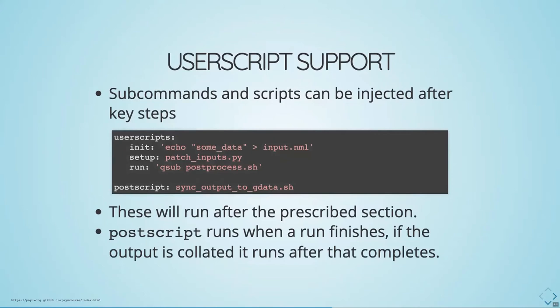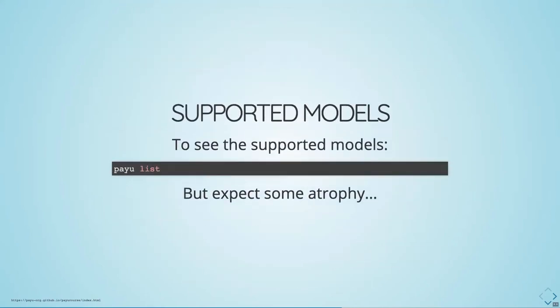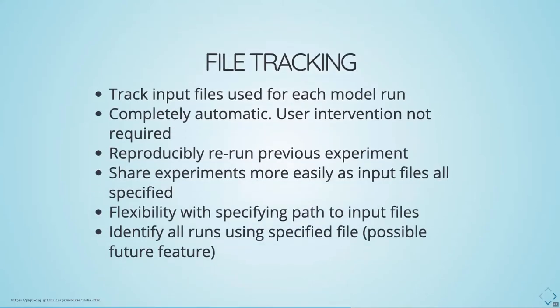You also have some user script support — little hooks that run commands at certain points in the run cycle: init, setup, run, and error. The AccessOM2 model uses some of those. There's also a post-script that runs every time the model finishes, or after collation is finished. The AccessOM2 models use that to automatically sync data to a shared location on GData. If you want to find out what models PayU supports, use PayU list, though don't necessarily expect it to always be working for less well-used models.